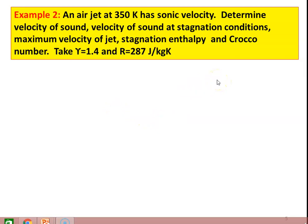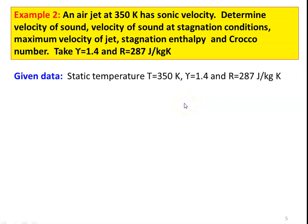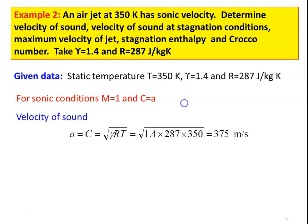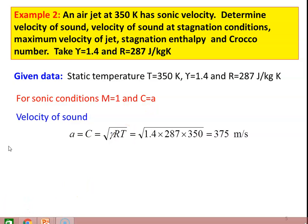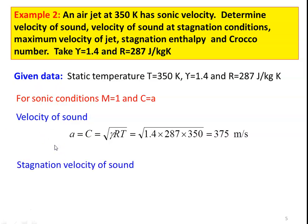Example 2: An air jet at 350 Kelvin has sonic velocity. Determine the velocity of sound, the velocity of sound at stagnation condition, the maximum velocity of the jet, stagnation enthalpy, and the Crocco number. Take γ = 1.4 and R = 287 J/kg·K. Given: static temperature T = 350 K. For sonic condition, M = 1, so C = A. Velocity of sound: A = √(γRT) = √(1.4 × 287 × 350) = 375 m/s.